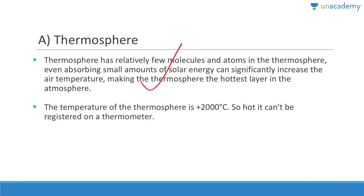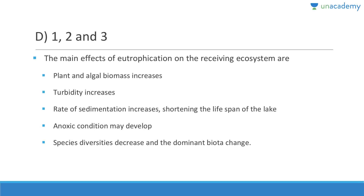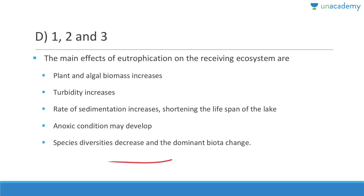Effects of eutrophication: plant and animal biomass increases, turbidity increases, rate of sedimentation increases, anoxic conditions may develop, and species diversity decreases with dominant species changing. The lifespan of the lake is shortened and toxic conditions may develop.